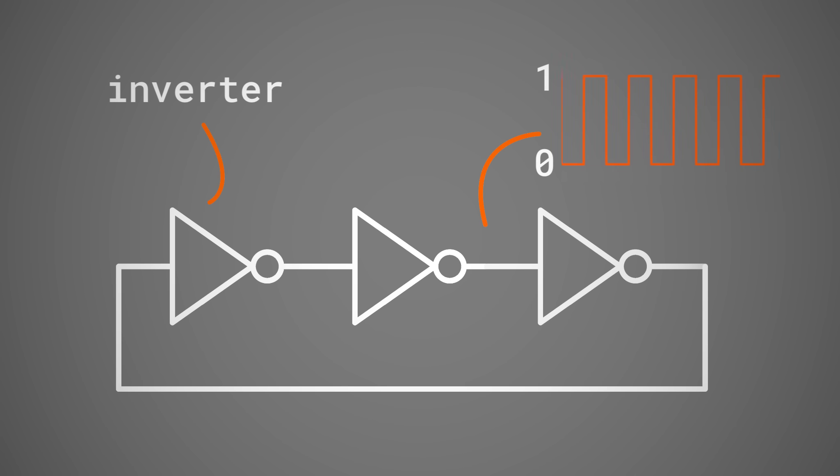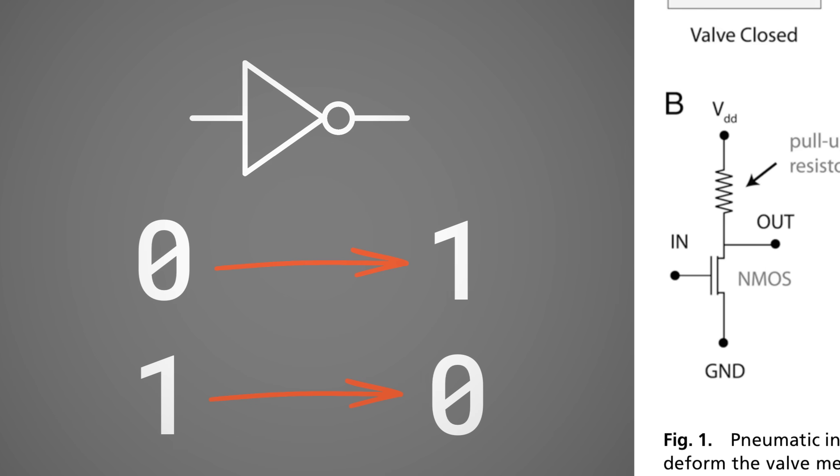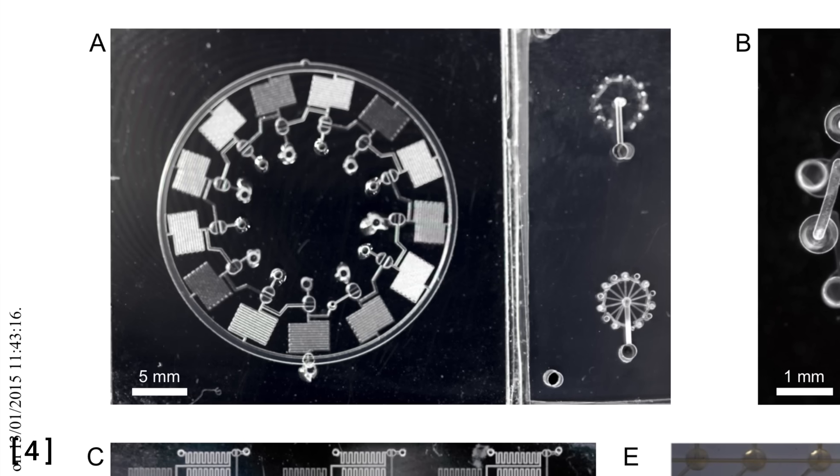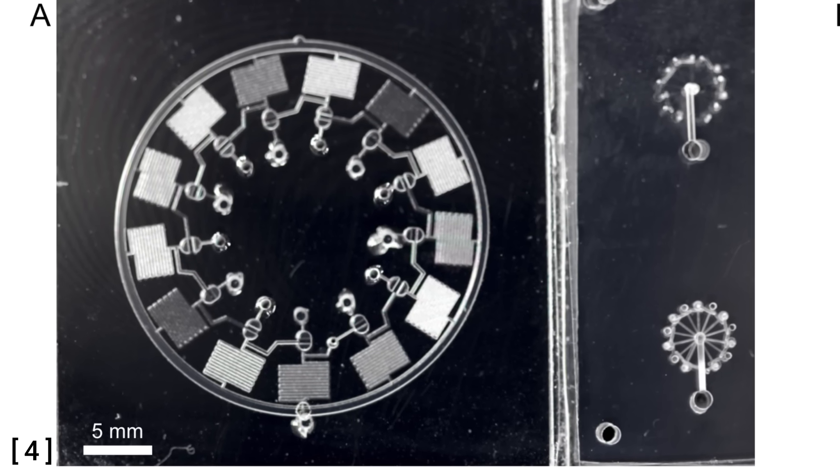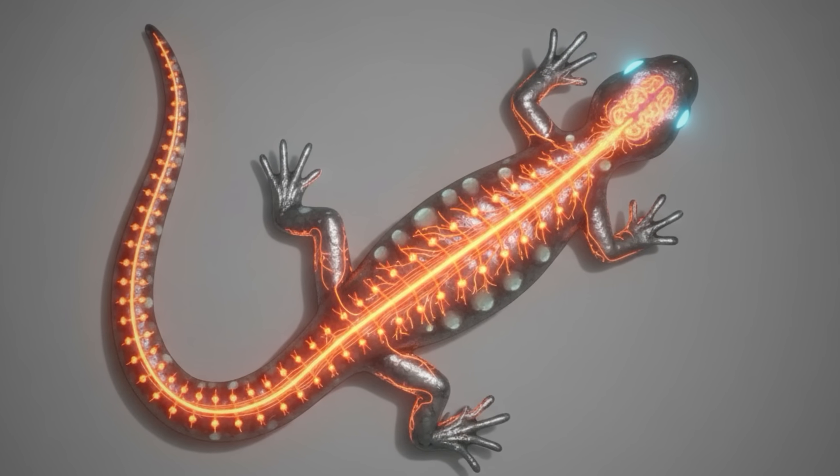And what is an inverter? It's a little logic gate that flips the signal. To build one, we need a transistor and a resistor, but for air. Can we build an air powered ring oscillator, a nervous system for our squishy robots?